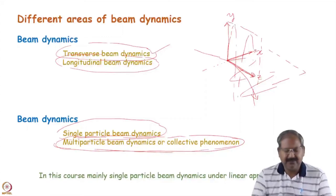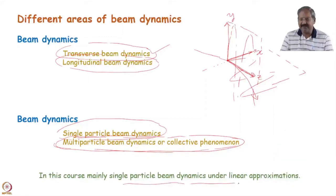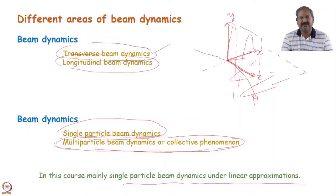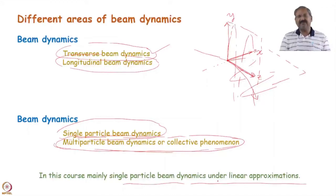In this course we will mainly concentrate on single particle beam dynamics under linear approximations. Single particle beam dynamics can be broken down into linear and non-linear beam dynamics. Introduction of a sextupole can lead to non-linear motion for particles - where non-linear terms are introduced in the Hill's equation - giving rise to stable and unstable betatron oscillations. That kind of study is known as non-linear beam dynamics, which we will not address in this course.